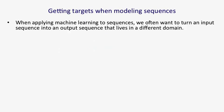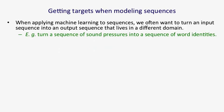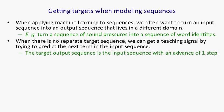When we're using machine learning to model sequences, we often want to turn one sequence into another sequence. For example, we might want to turn English words into French words. Or we might want to take a sequence of sound pressures and turn it into a sequence of word identities, which is what's happening in speech recognition. Sometimes we don't have a separate target sequence, and in that case we can get a teaching signal by trying to predict the next term in the input sequence. So the target output sequence is simply the input sequence with an advance of one time step.